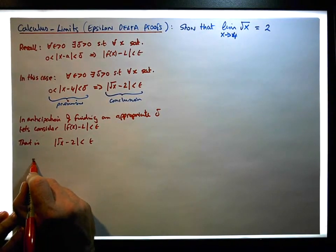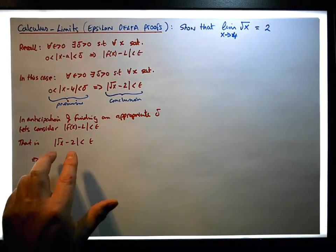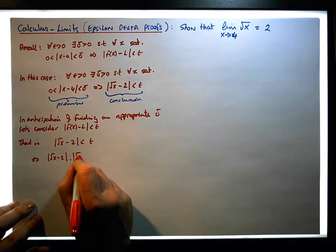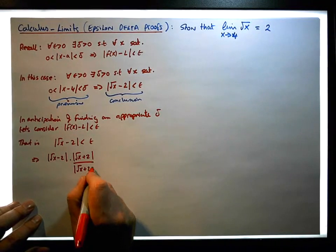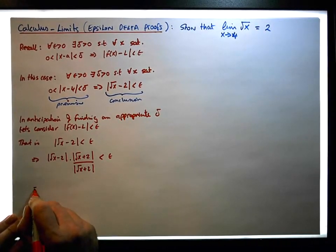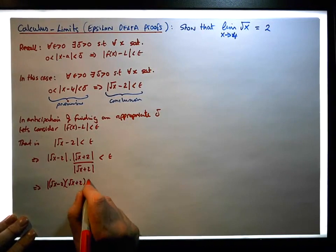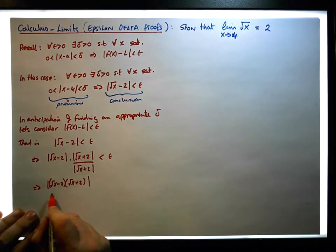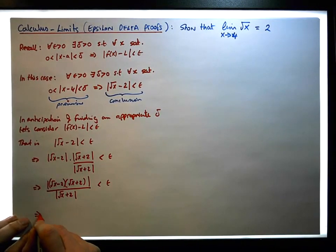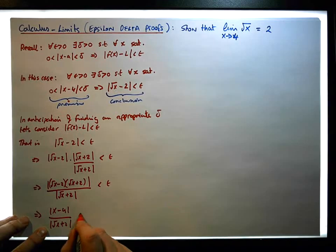We need to get rid of this square root of x. If we multiply the top by the square root of x plus 2, that would reduce this down. So this is the same as the absolute value of the square root of x minus 2 multiplied by the absolute value of the square root of x plus 2, all over the absolute value of the square root of x plus 2. The absolute value of a product is the same as the product of the individual absolute values. When we multiply out the brackets, we end up with x minus 4, so the absolute value of x minus 4 over the absolute value of the square root of x plus 2 must be less than epsilon.